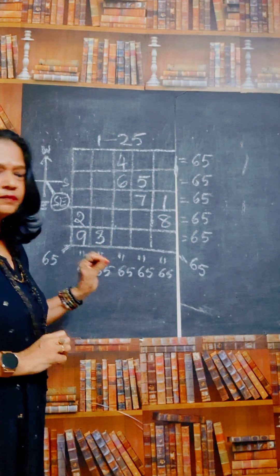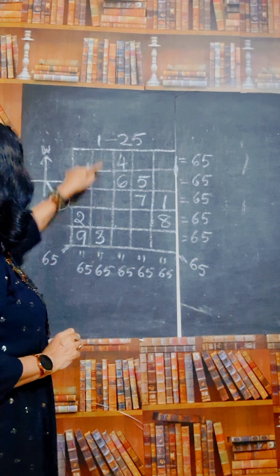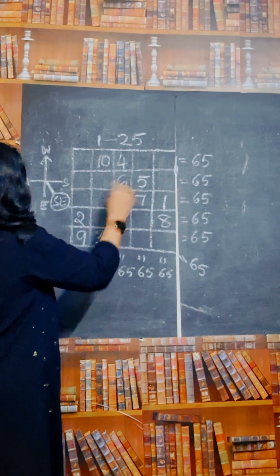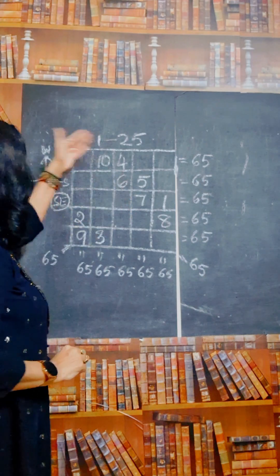Then again south east, then again south east, then again south east. Here no box, go to the top. 10, again south east. It is already different. Go to the next.